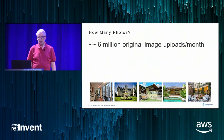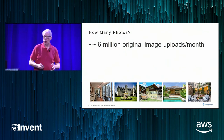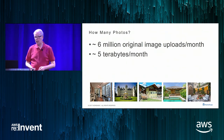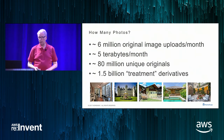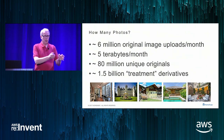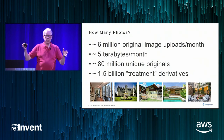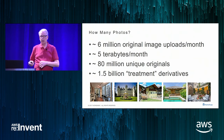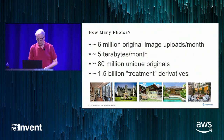How many photos? We get six million images uploaded every month. We have to process that into all sorts of different sizes — that's five terabytes a month, with 80 million unique originals today. Of those original images, we end up producing everything from thumbnails to 1920-wide landscape images, ending up with about 1.5 billion derivative treatments that we serve up to the internet.